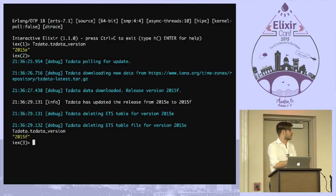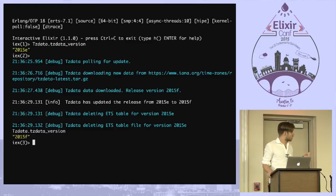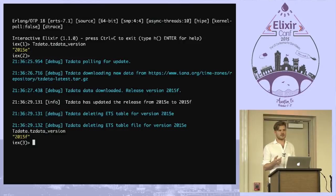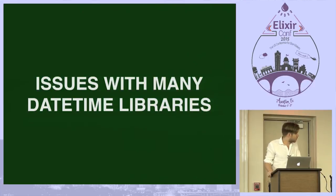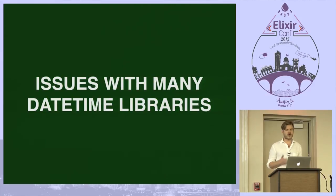Why do people have so many problems with date and time? I think one problem is that the libraries don't encourage you to do the right thing — they actually do the opposite. I don't think the people who make these libraries intend this, but it's basically because in C the standard way to get time is local time, and then people just do things the same way in each new language they make.